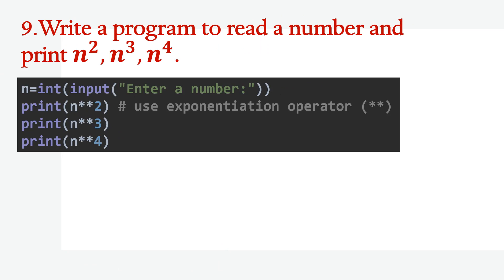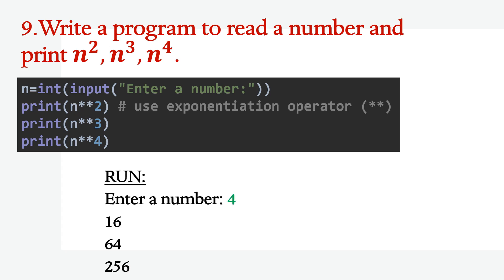Write a program to read a number and print n squared, n cubed, and n to the power 4. N is the number entered by the user. It will print n**2 using the exponentiation operator (double star), then n**3, then n**4. For input 4, it prints 16, 64, and 256.